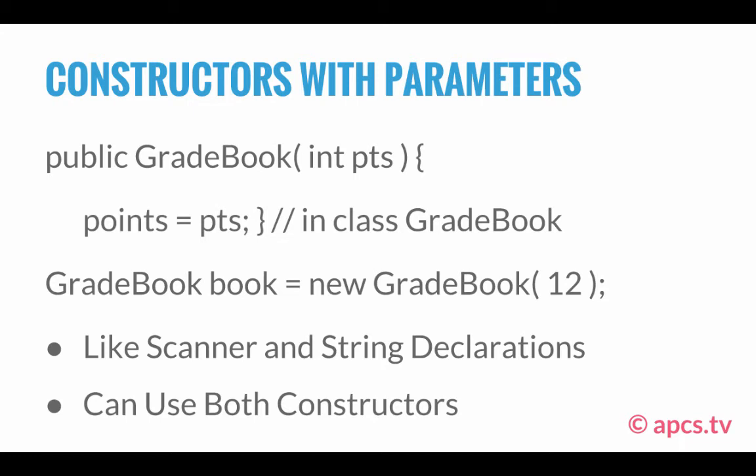In an external client program, we have: GradeBook book = new GradeBook(12); What this is doing is calling the public constructor method GradeBook(int pts), replacing int pts with 12 — so we're setting the value of pts to be 12. This creates the book variable of type GradeBook. Book is an object reference referring to the GradeBook object. This object has an instance variable points which has a value of 12, because the argument passed was 12, which sets the private instance variable points to 12.